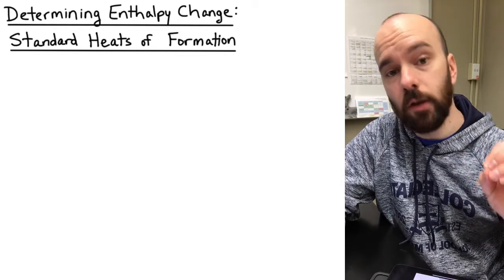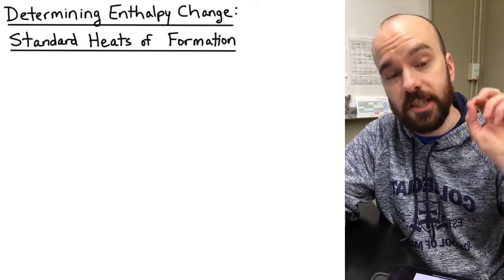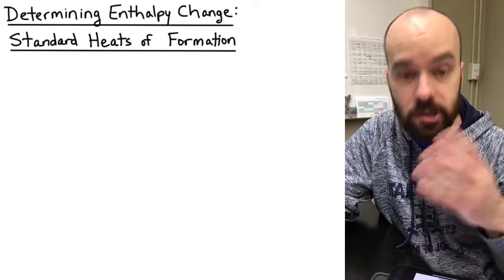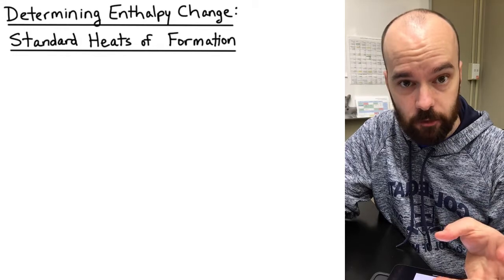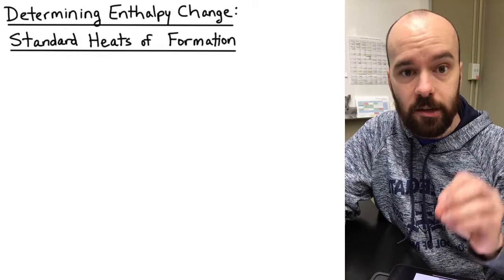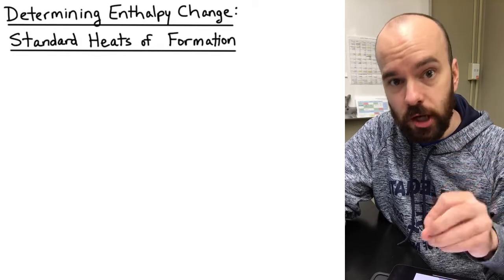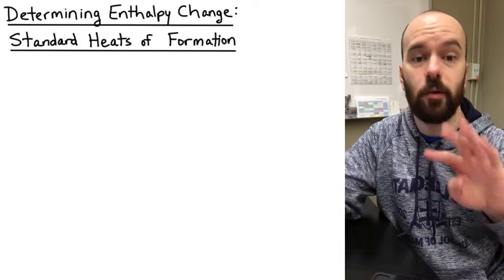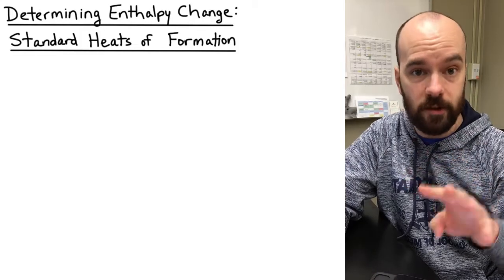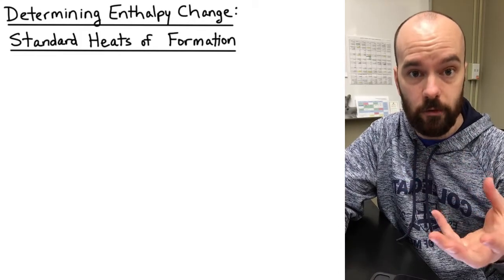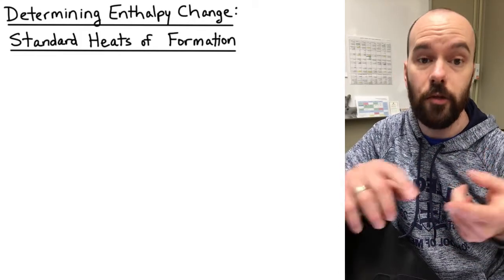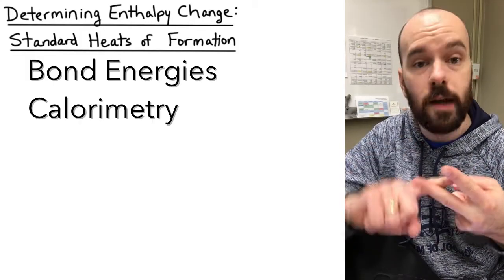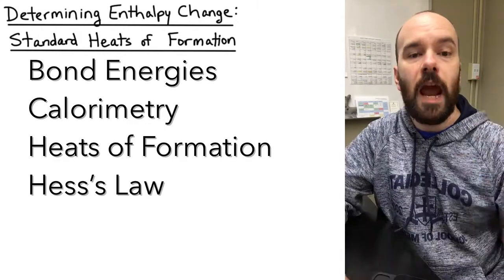In this video we're going to look at how we can use standard heats of formation, or standard enthalpies of formation, to calculate the enthalpy change for a reaction. Using standard heats of formation is one of the four ways to determine the enthalpy of a reaction, the others being bond energies, calorimetry, and Hess's law.